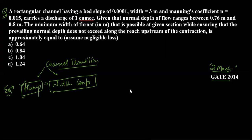A rectangular channel having a given bed slope, width, and Manning's coefficient, carrying a discharge of 1 m³/s — given that normal depth of flow ranges from 0.76 to 0.8 m — find the minimum width of the throat at a given section while ensuring that the prevailing normal depth does not exceed the range along the reach upstream of the contraction. We assume negligible losses.